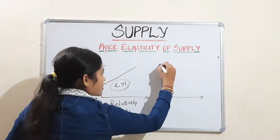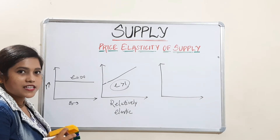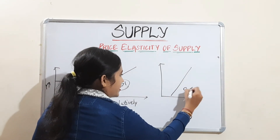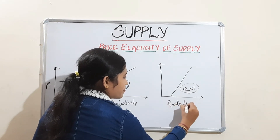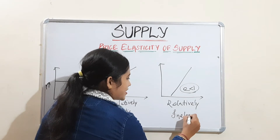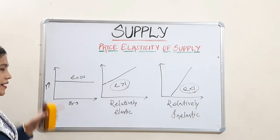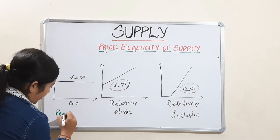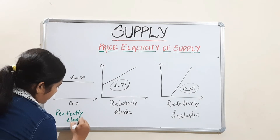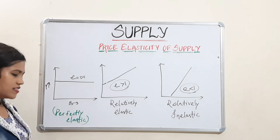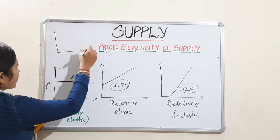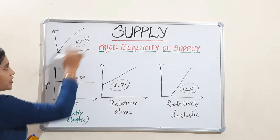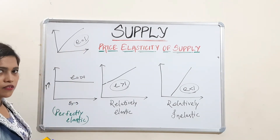Next is relatively inelastic — the curve will be steeper. Then unitary elastic: the curve moving through the origin is unitary elastic, similarly to what we studied in the demand curve.